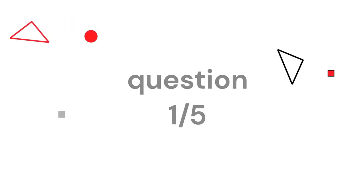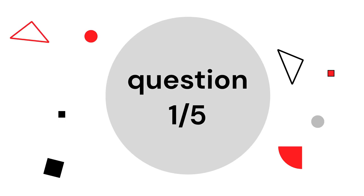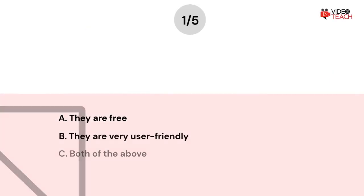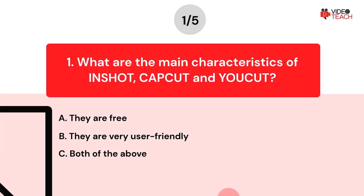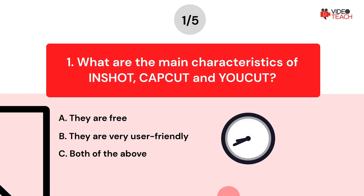Question number one. What are the main characteristics of InShot, CapCut, and YouCut? Option A: They are free. Option B: They are very user-friendly. Option C: Both of the above. Now you have about 15 seconds to think about your answer.